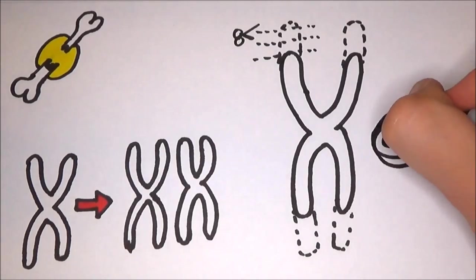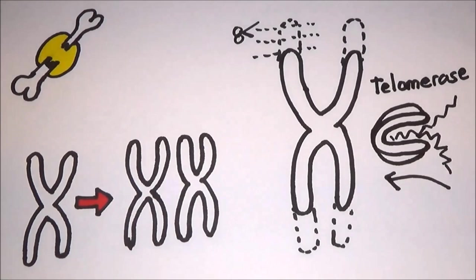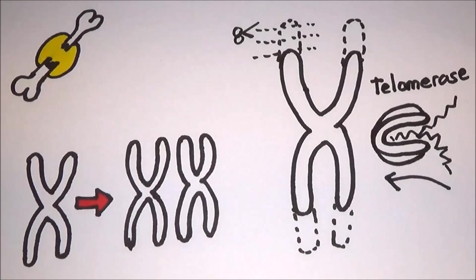In some types of cells, such as stem cells, an enzyme replaces the telomeres after each division, meaning the cells can, in theory, live forever. Harnessing this ability may bring us one step closer to eternal youth.